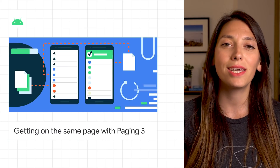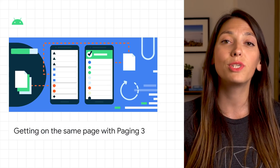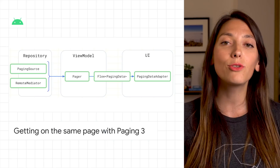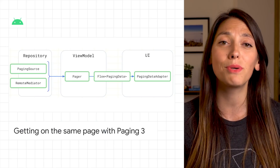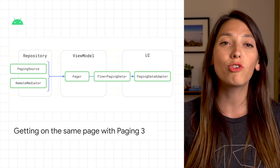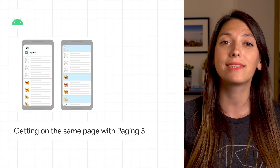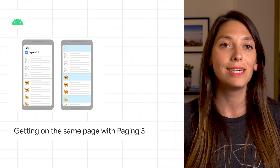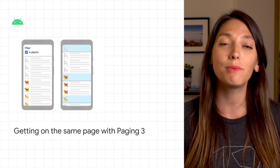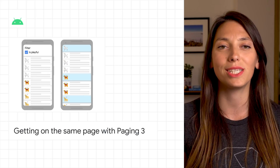The Paging Library enables you to load large sets of data gradually and gracefully, reducing network usage and system resources. And now, we launched Paging 3, a complete rewrite of the library using Kotlin coroutines, offering highly requested features like APIs to transform data, add separators, headers, and footers, displaying the loading state, and retrying failed requests. It's compatible with Paging 2, so it's easy to migrate. Check out the post for details.